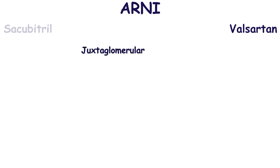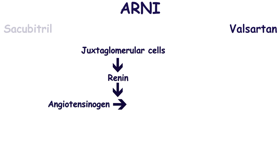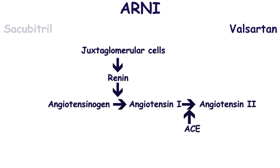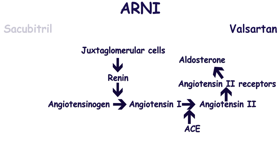Valsartan is an angiotensin-2 receptor blocker. In order to better understand the mechanism of its action, we will talk about the renin-angiotensin-aldosterone system. Juxtaglomerular cells release renin in response to a decrease in afferent arterial pressure, reduced sodium chloride delivery to the macula densa, and increased sympathetic tone. Renin cleaves a decapeptide angiotensin-1 from angiotensinogen. Angiotensin-1 is transformed into angiotensin-2 by the angiotensin-converting enzyme, also called ACE, which is synthesized mainly in the lungs.